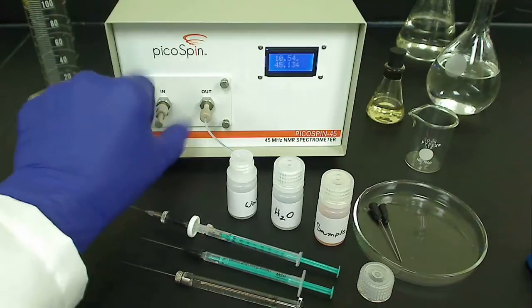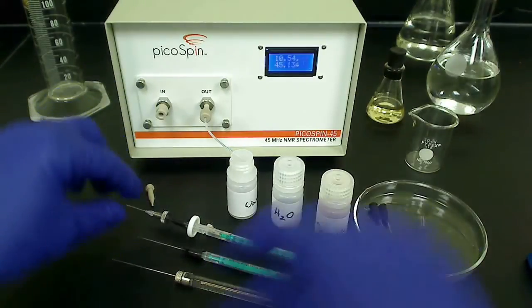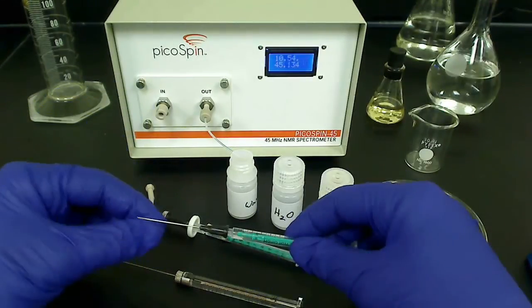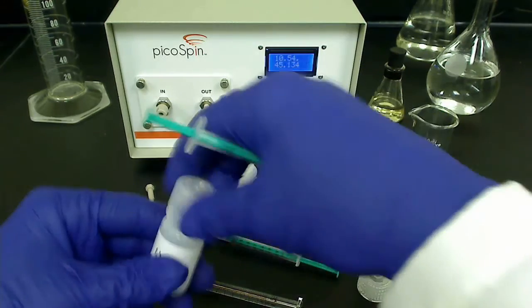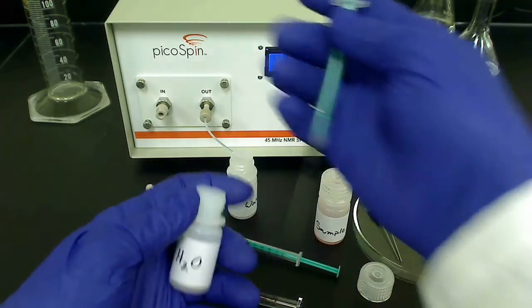When finished with the experiments for the day, we want to clean the cartridge by purging the last sample with an appropriate solvent, and finally with water, so that in the morning the unit is ready for shimming.